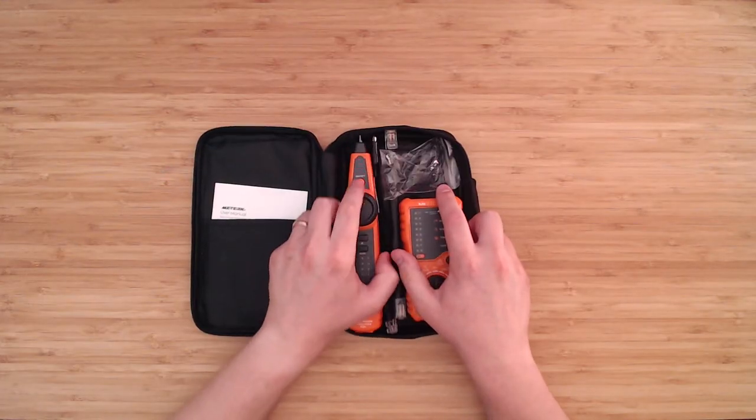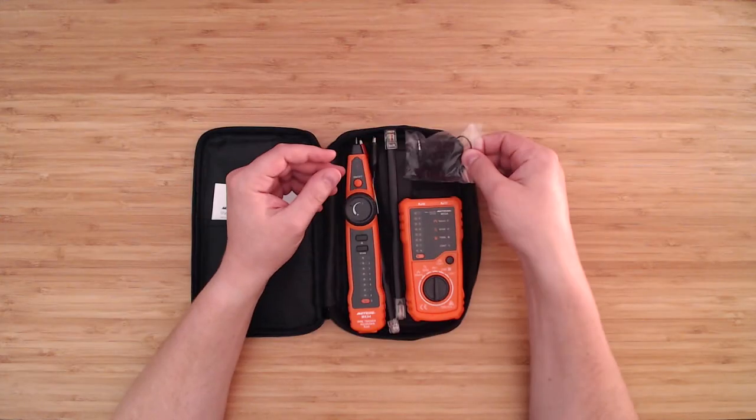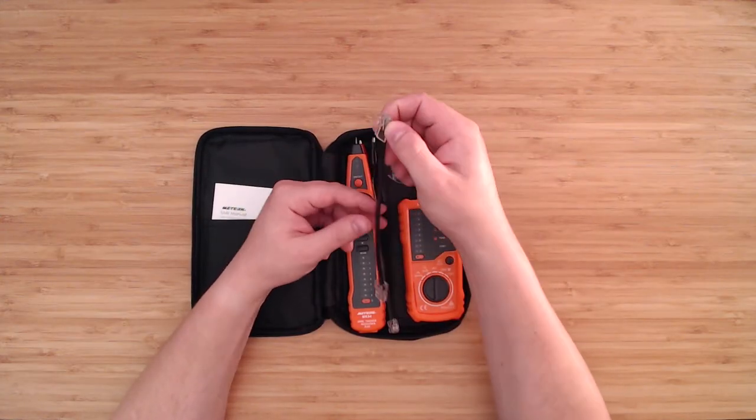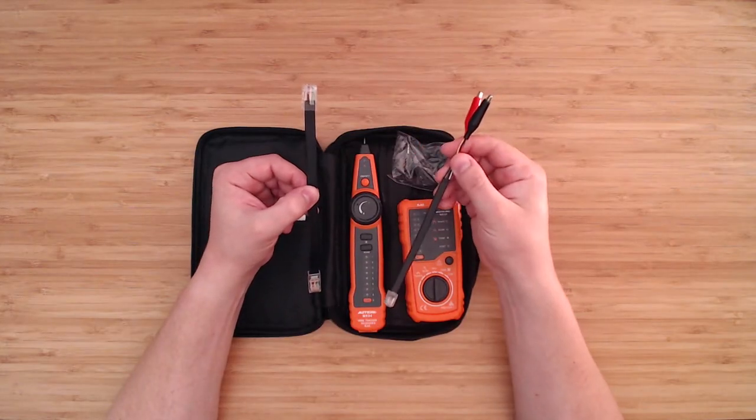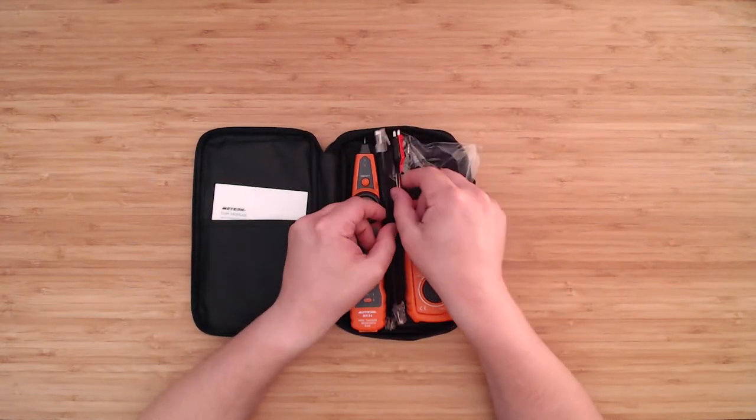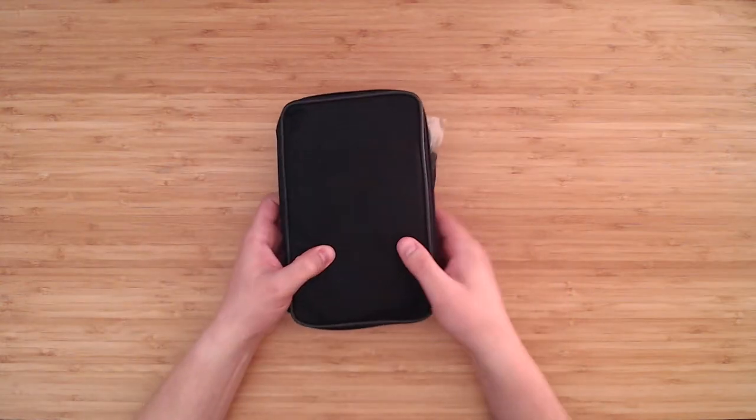To complement that 2.5 millimeter jack we have earbuds. Also included two cables: RJ45 to RJ45 and RJ11 to alligator clips. All of this comes in a zip up little case for easy storage.